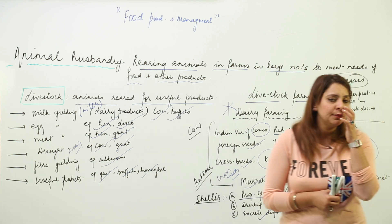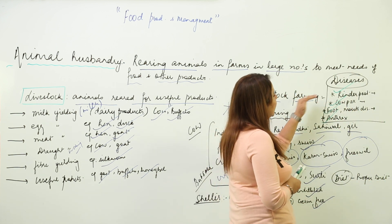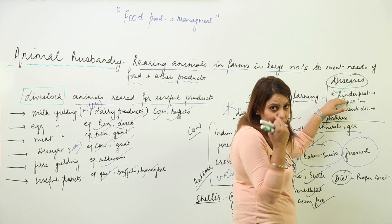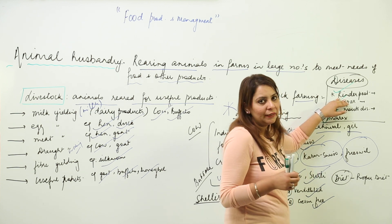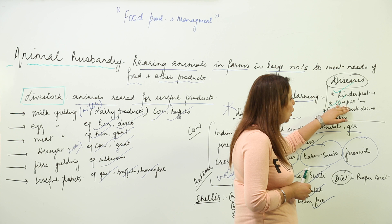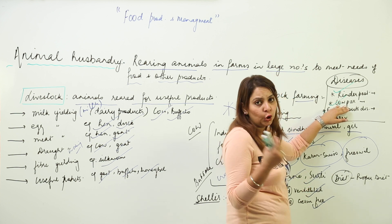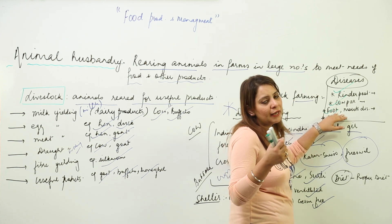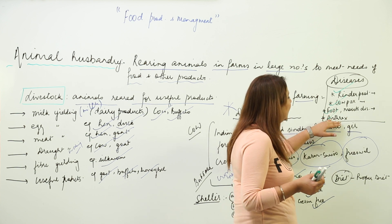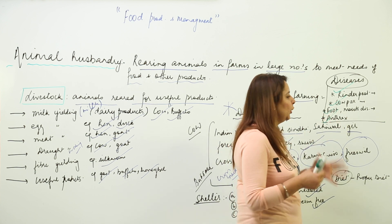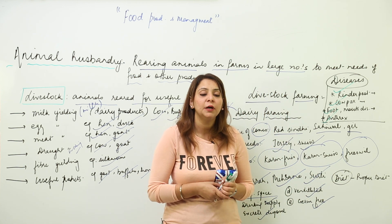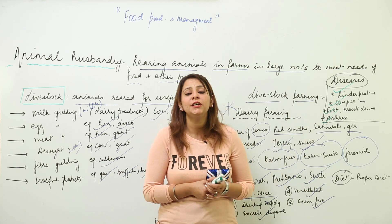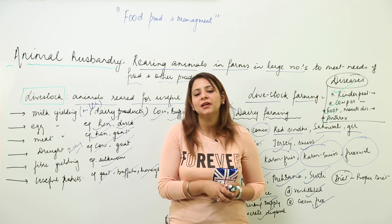In Rinderpest, there is loss of appetite, nasal discharge, and diarrhea. In Cowpox, the animal develops fever and nodules on the skin. In Foot-and-Mouth disease, there is excess salivation from the mouth, the animal stops eating, and becomes inactive. In Anthrax, there is swelling in the body and the animal becomes inactive. If you observe these symptoms, you need to take preventive measures to prevent the disease.